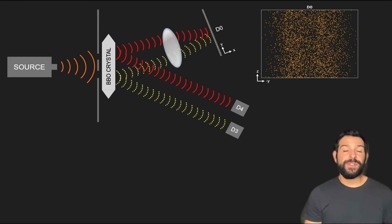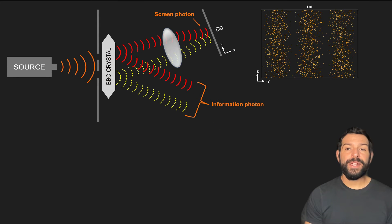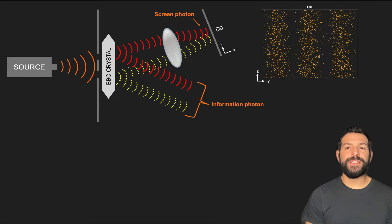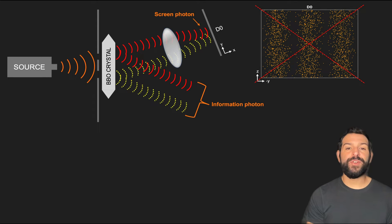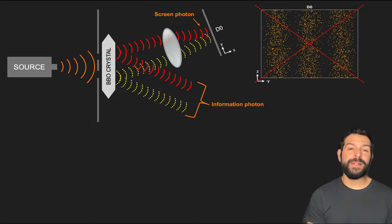Now this description is entirely wrong. The mere action of generating an entangled pair of photons is enough to prevent the screen photon from interfering with itself. This is because when entanglement happens, both photons are fully described by a global wave function rather than by separate and independent quantum waves.